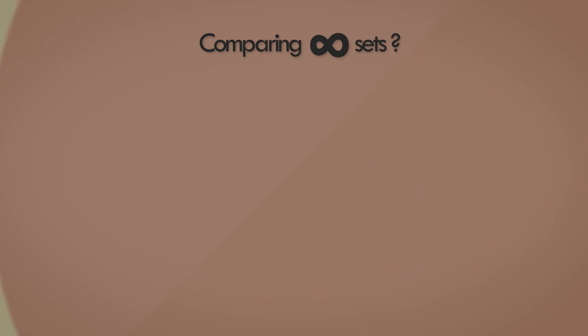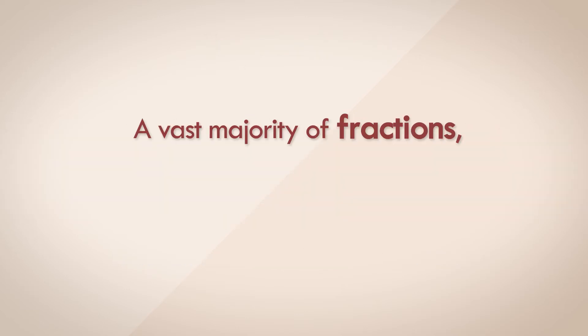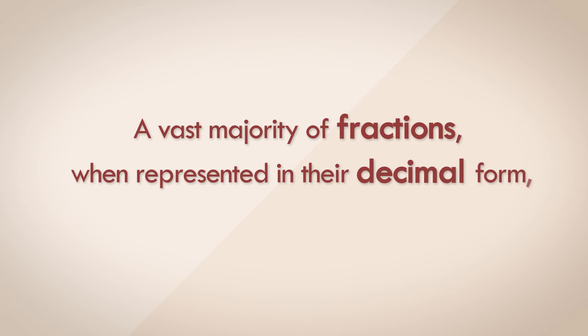With the emergence of the set theory in the 19th century, mathematicians like George Cantor formally defined the idea of infinite sets, and the proof that some infinities are bigger than the others. Anyway, I digress. The point I am trying to make here is that a vast majority of numbers that we encounter in calculations, when represented in decimal form, is an approximation.